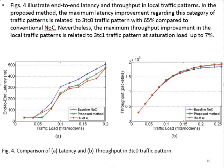Figure 4 illustrates the latency and throughput in the local traffic pattern. The maximum latency improvement in this category is related to the 3TC0 traffic pattern with 65% improvement compared to conventional NoC. The maximum throughput improvement in the local traffic pattern is also related to the 3TC0 traffic pattern, with saturation load improvement of up to 7%.